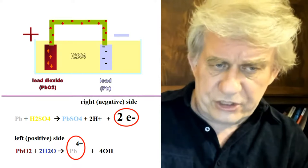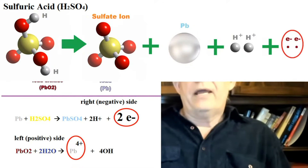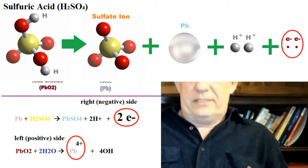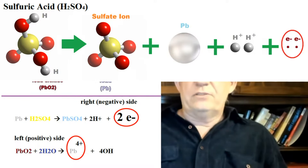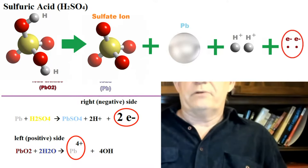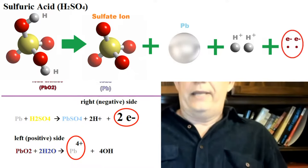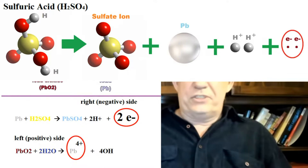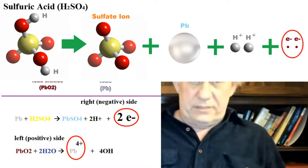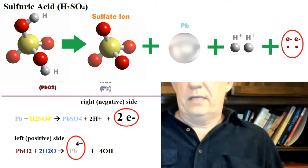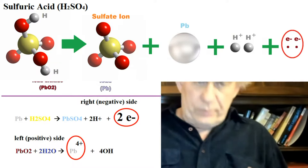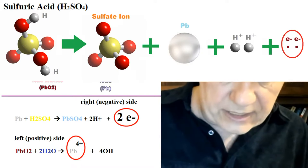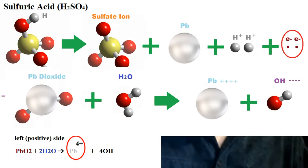Now showing the reaction more graphically. For the negative plate: sulfuric acid loses its two hydrogen atoms — the gray ones on top and bottom — producing a sulfate ion that combines with the lead ion. This releases two hydrogen ions (H⁺) — they're not even atoms, they're ions — and two electrons (2e⁻). Those two electrons are what we're concerned about, because they provide the charge on the negative plate.